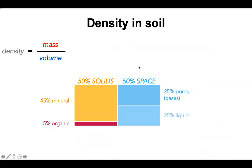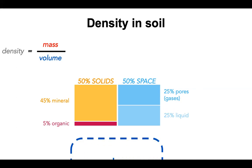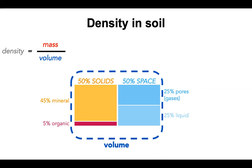When we think about density in soil, it's helpful to go back to that diagram from week zero or week one. Soils are about 50% solids, of which 45% is mineral — decomposed rock — and about 5% is organic matter. Then we have about 50% open space: 25% pores filled with air or gases, and maybe 25% filled with liquid. When we talk about the volume aspect of density in soils, we want the total volume.